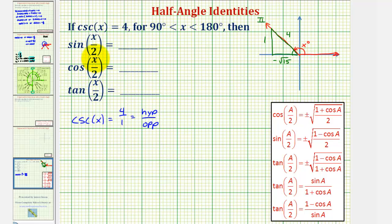And now we'll use one of our half angle identities to determine the value of sine x over two. One thing to notice though, is if we take an angle between 90 and 180 degrees and divide it by two,